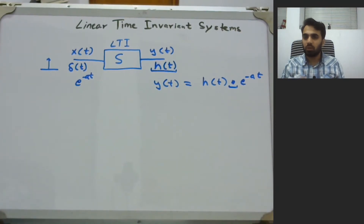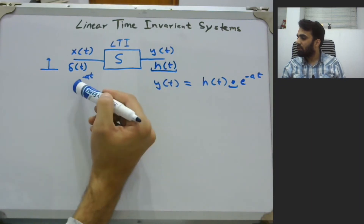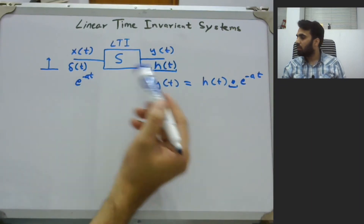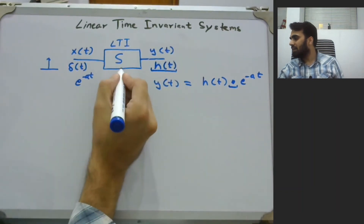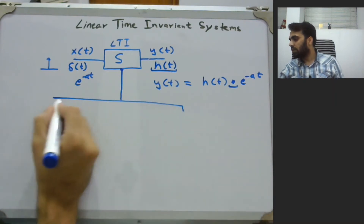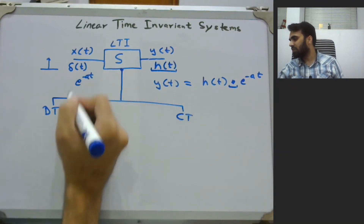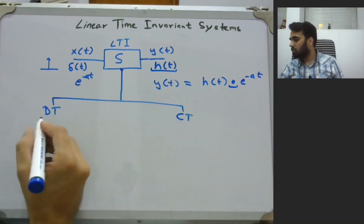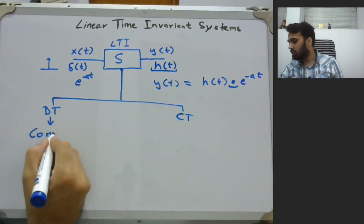Convolution is the operation we will look into in this video. If the input is delta(t), the output is the impulse response; if you give any arbitrary input, you can get the output simply from the impulse response. LTI systems can be categorized into discrete time and continuous time. That previous example was continuous time; in discrete time we have something called the convolution sum.